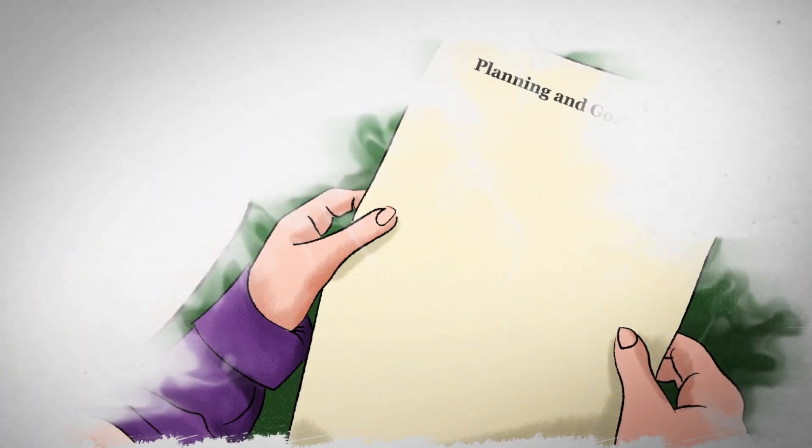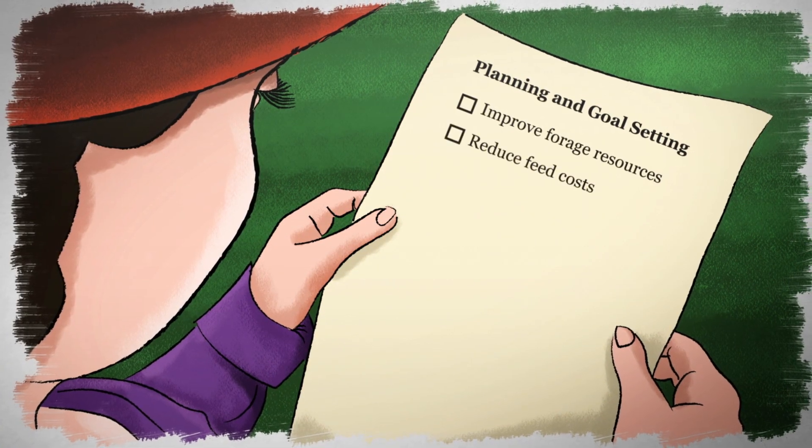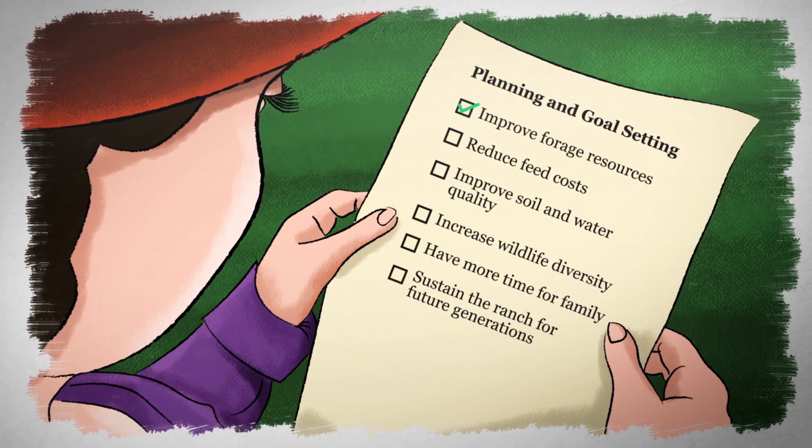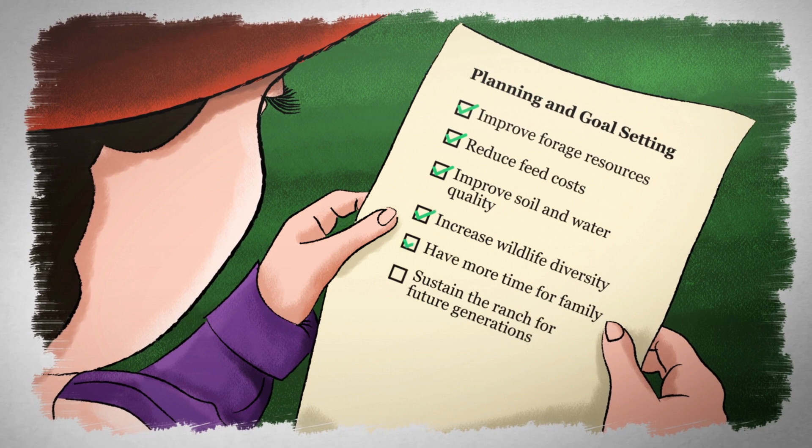You'll start by setting short and long-term goals that capture what you want for yourself, your family, your business, and the land. Everything you do as a producer should support these goals.